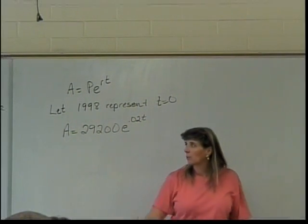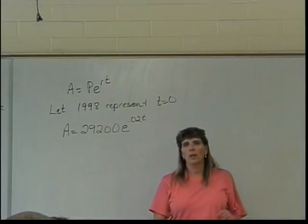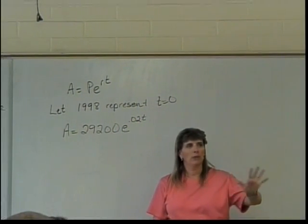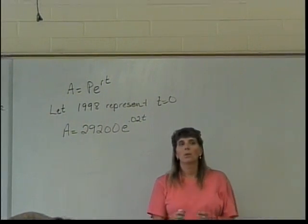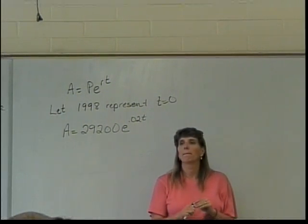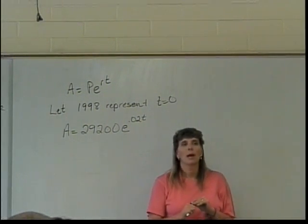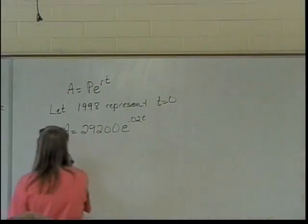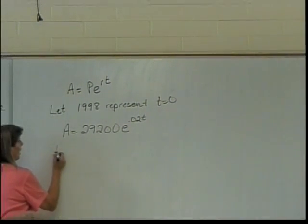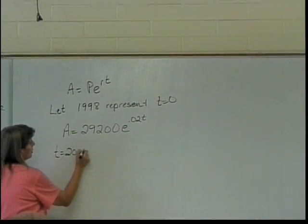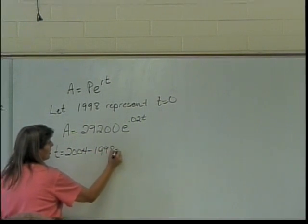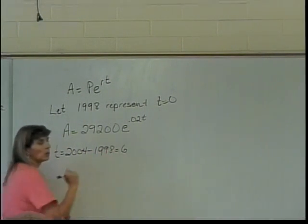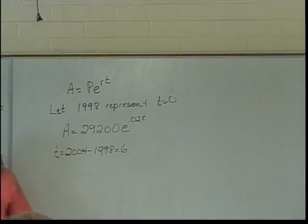Projected population in 2004 — what do I do to find that? Plug in what for T? How do you get six? I take my 2004 and subtract my 1998. That tells me that T is going to be six years since 2004, so I'll plug that in.